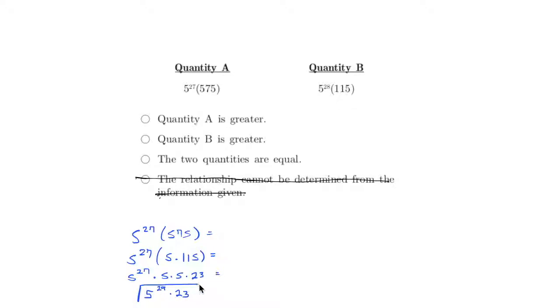And you bet we're going to be doing a similar thing to the other number here, to see if we can definitively say which of these is bigger. Now 5 to the 28th times 115, which is one we've already done. We've already seen that 115 is 5 times 23.